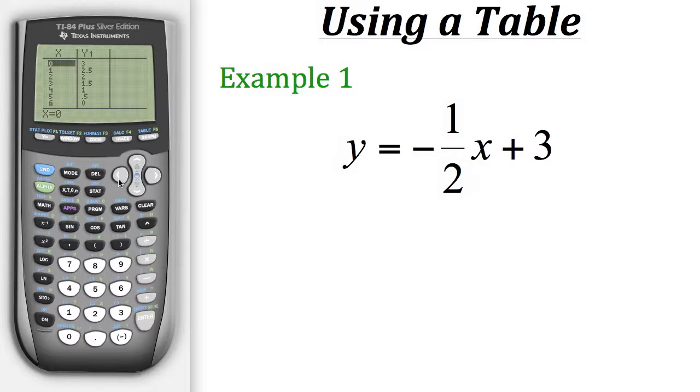Well, what we could do is we could change the settings on our table. Up here on the top, above window, we have blue lettering that says table set. So if we go there, we hit second window, we could change the settings to our table. So up here at the top, it has table start. So that's going to be the x value where the table will start when we go to that part of the calculator. Now right below that, we have this delta symbol next to the word table. Now what this is referring to is the increments that the table is increasing or decreasing by. So for example, it's set to 1 at the moment, and that's why our table earlier would just go up by 1's every time.